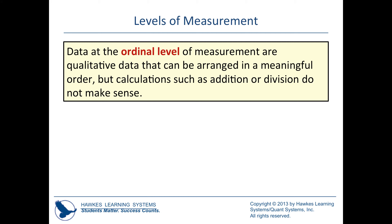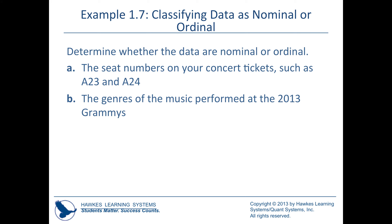The ordinal level means qualitative data that can be arranged in a meaningful order, but you can't add or subtract meaningfully. The classic example is class rank or race finishing position — first, second, third. At the end of the semester, final scores can be ordered to give a class rank (ordinal). However, the final class average used to generate that rank is quantitative continuous.